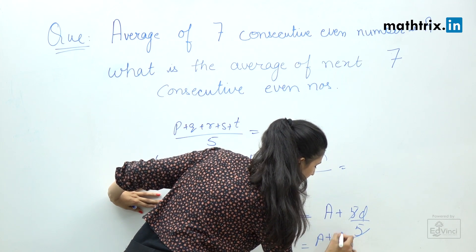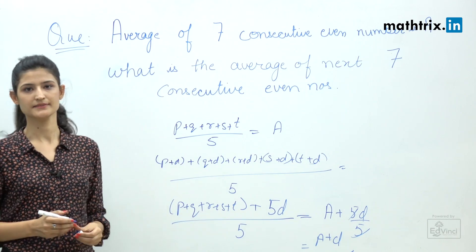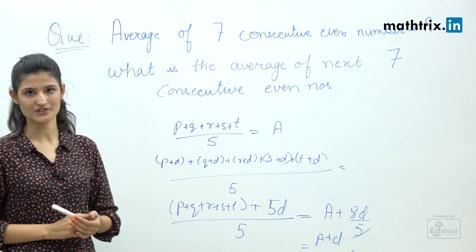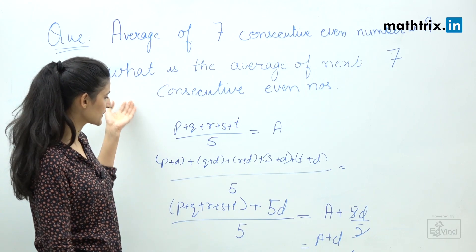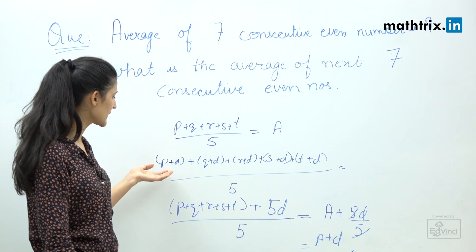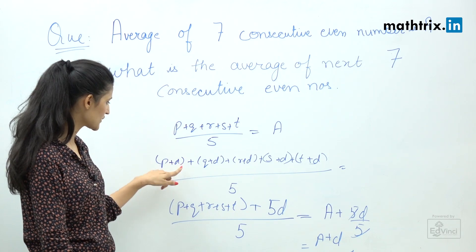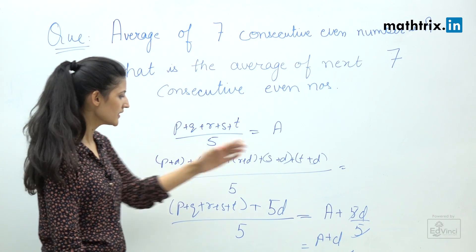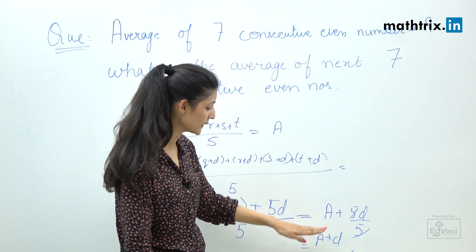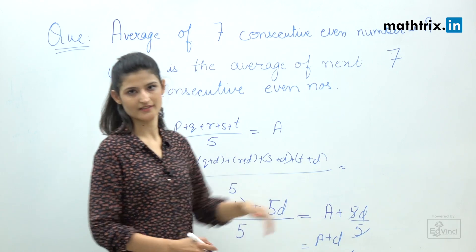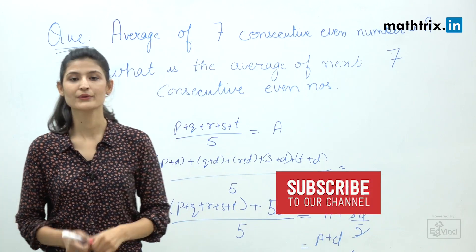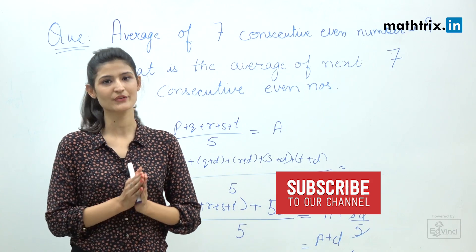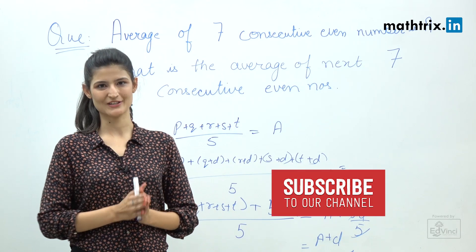That's how you can solve average questions quickly. In the given question, every number is increased by 14, so replacing d with 14 gives the answer a plus 14. I hope you liked this video — stay tuned because we have more tricks for you, and don't forget to subscribe!